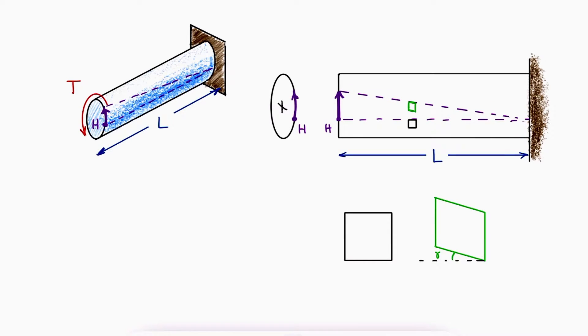From the shearing strain main video, you might remember that the shearing stress is equal to the shearing modulus, or modulus of rigidity, times the shearing strain, gamma.